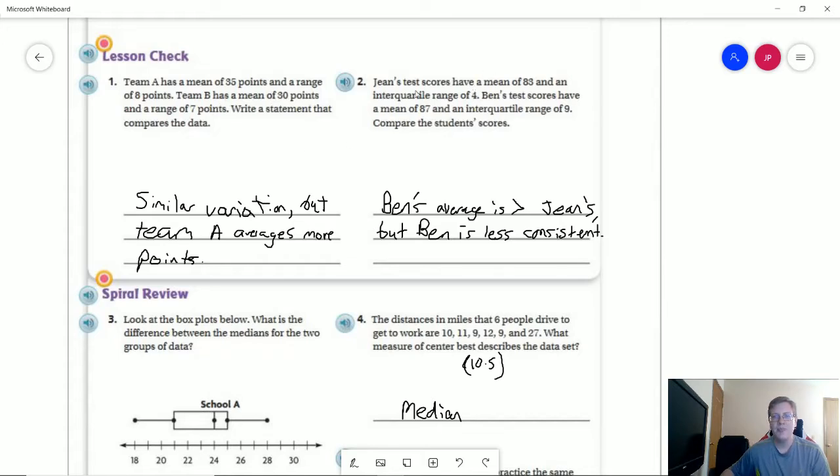For B, Ben is going to have an average test score of four points higher using a mean. And then our interquartile range of nine suggests that Ben is far less consistent. So that most compact set of data values is going to be much more spread out compared to Gene's test scores.